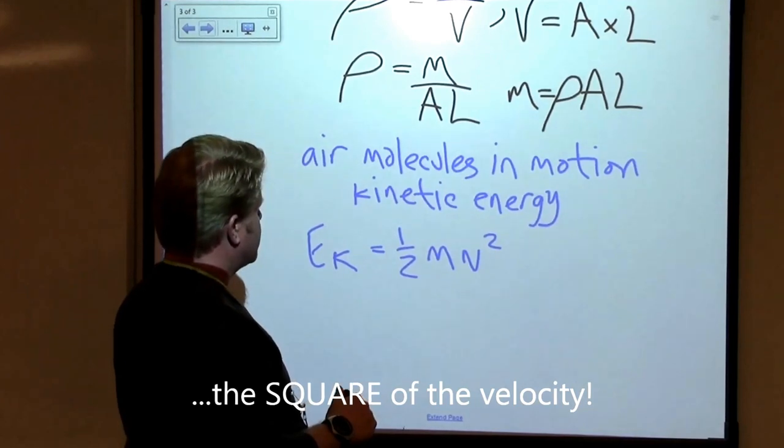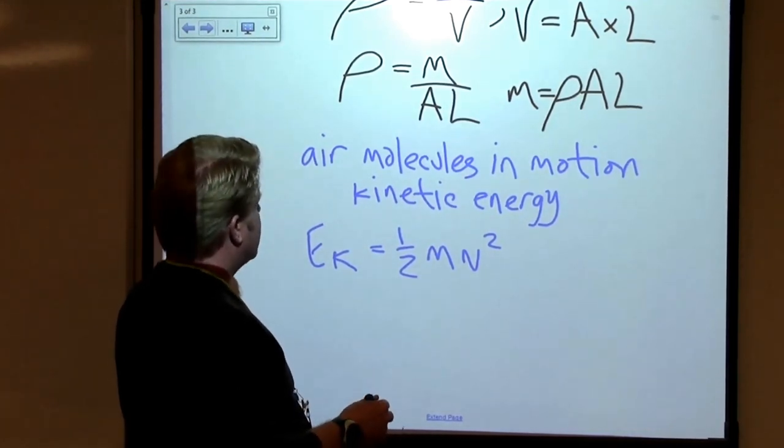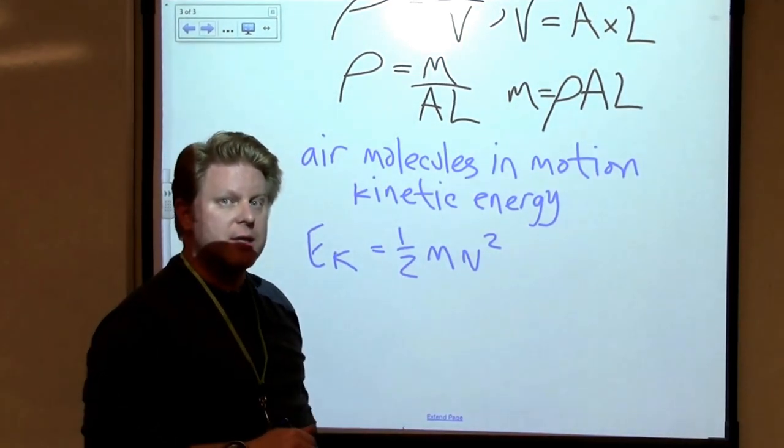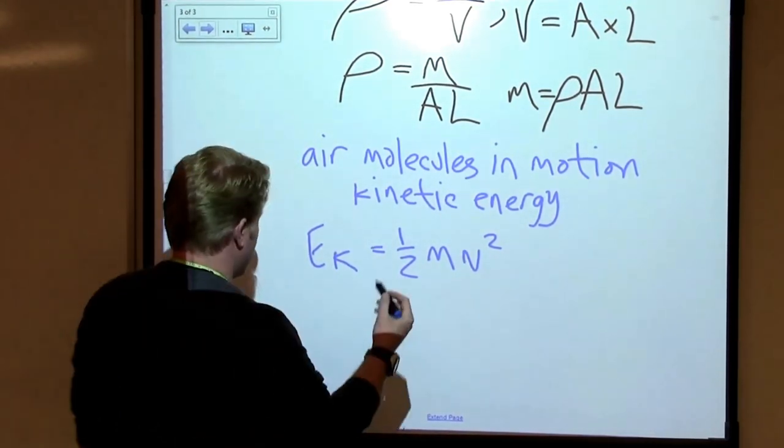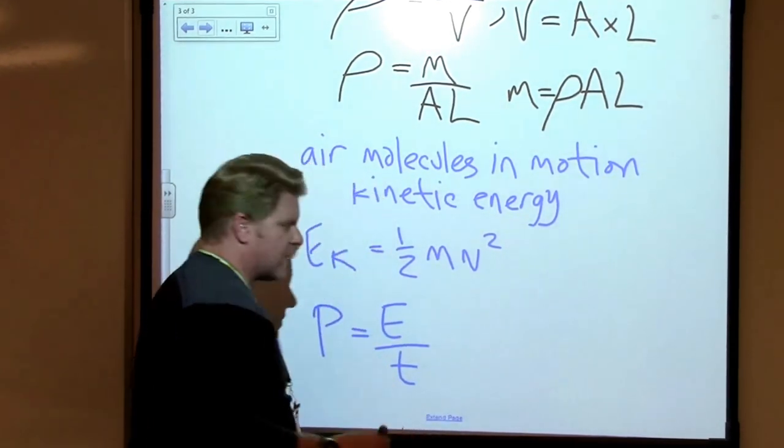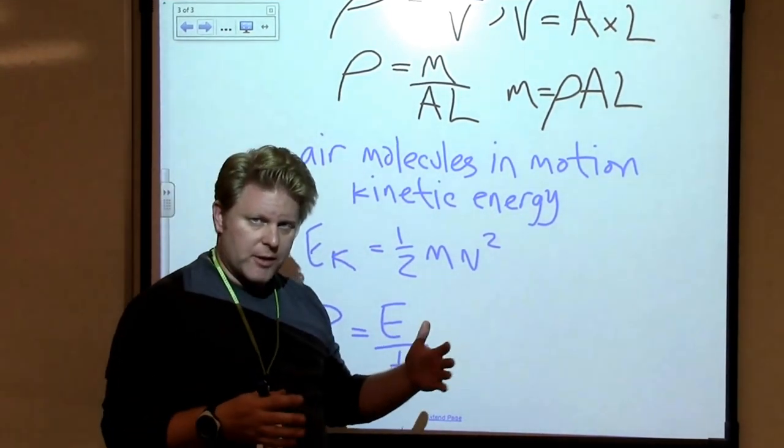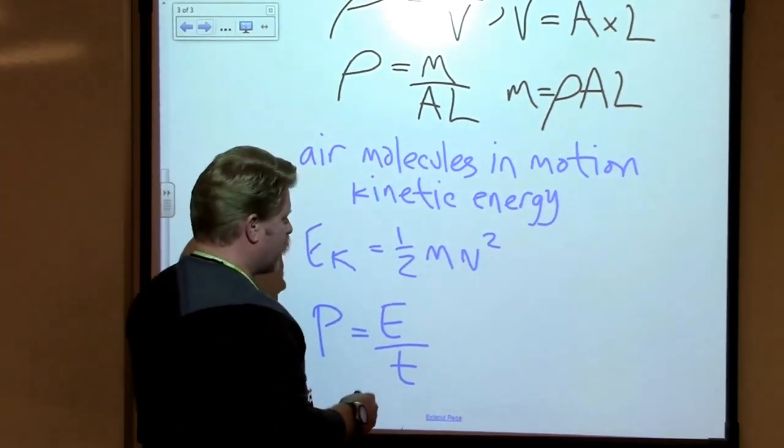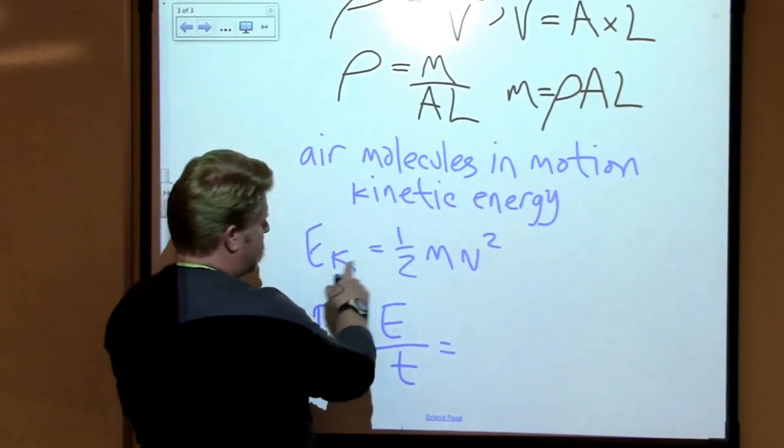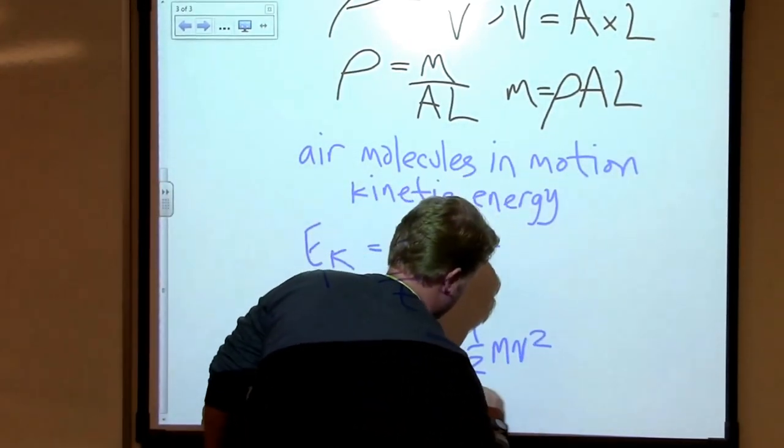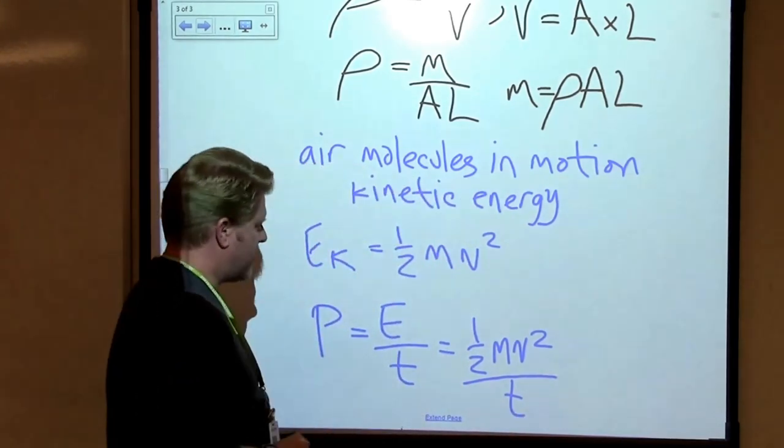Well, alright, so what do we do? We don't really want the energy, we want the power that's available from the air moving across these blades. And we know that power is equal to the amount of energy that's available to us in some amount of time. So we can say that power is energy divided by time. And so let's plug in our energy term, one half mv squared divided by time.